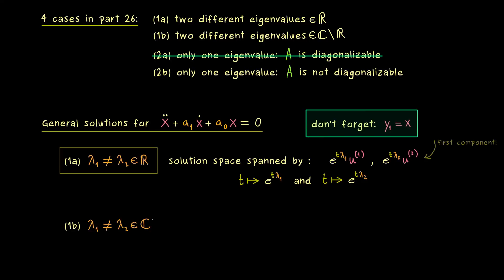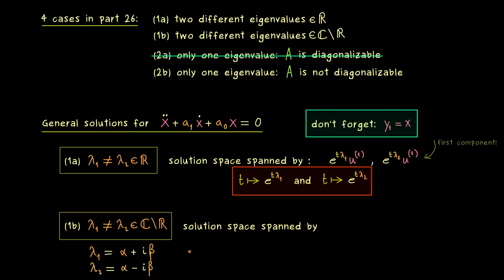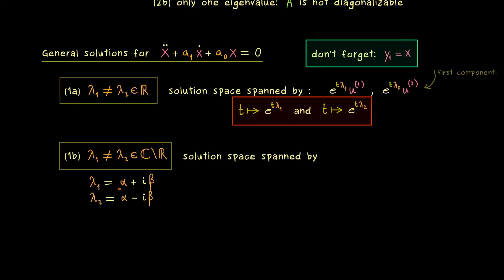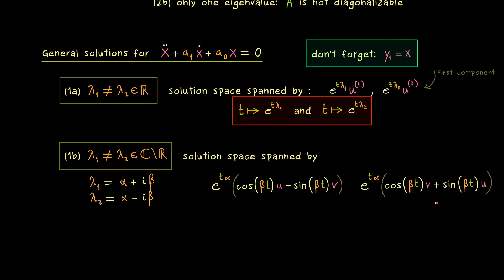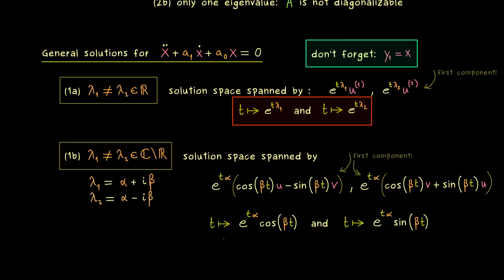In case 1b, the two eigenvalues are not real but can be written using two real numbers alpha and beta. The sine and cosine functions appear. The two solution vectors both contain e^(alpha * t), combined with cos(beta * t) and sin(beta * t) respectively. Since the first component of the eigenvector is 1 (with no imaginary part), taking the first component gives: the first function is e^(alpha * t) times cos(beta * t), and the second function is e^(alpha * t) times sin(beta * t). The solution space in this case is spanned by just these two functions.